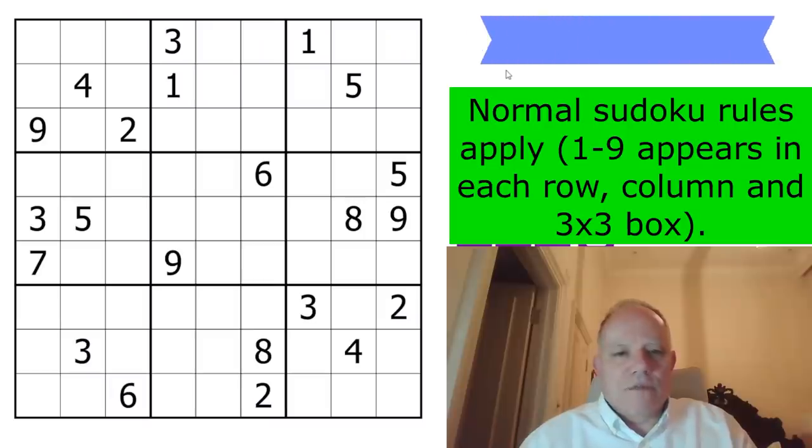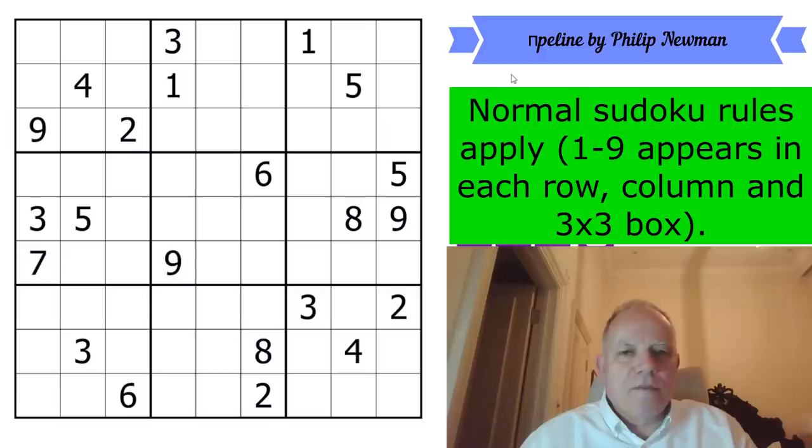But this puzzle, I don't have to explain the rules because you know them already. One to nine appear in each row, column, and three by three box. It's called Pipeline, with Pi spelled with a Greek character, of course. Let me start the clock so I know how long it takes me. I'm going to start now.